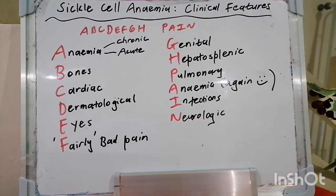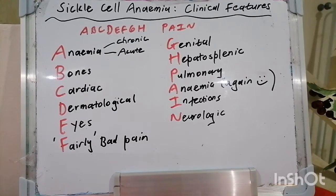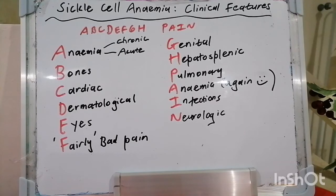This leads to vaso-occlusive phenomenon like infarctions, ischemia, and hemolysis. Subtypes include sickle cell disease which entails homozygous hemoglobin S, which is most severe. Then we get hemoglobin SC disease which is heterozygous and moderately severe, and sickle cell trait which is also heterozygous hemoglobin S and is mild.